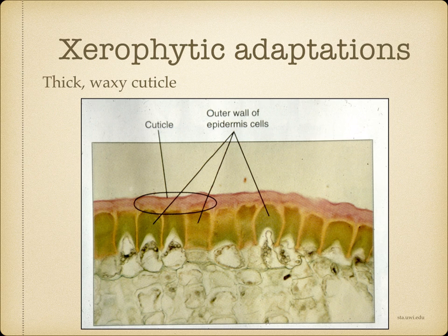One way of surviving in habitats with an unfavourable water balance is to reduce the rate at which water can be lost by transpiration. Since the vast majority of transpiration occurs through the leaves, it is in these organs that the most modifications are found.